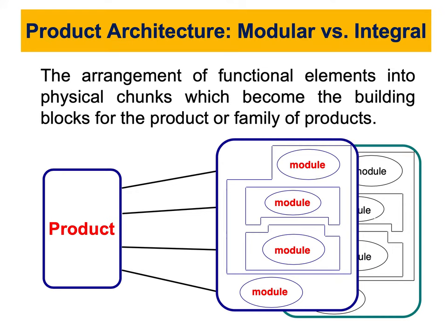We want to keep this as simple as possible: each building block will perform a function and they are named chunks. Each chunk is made up of a collection of components that implement the functions of the product. The architecture of the product is the scheme by which the functional elements are arranged into physical chunks, and by which the chunks interact with each other.